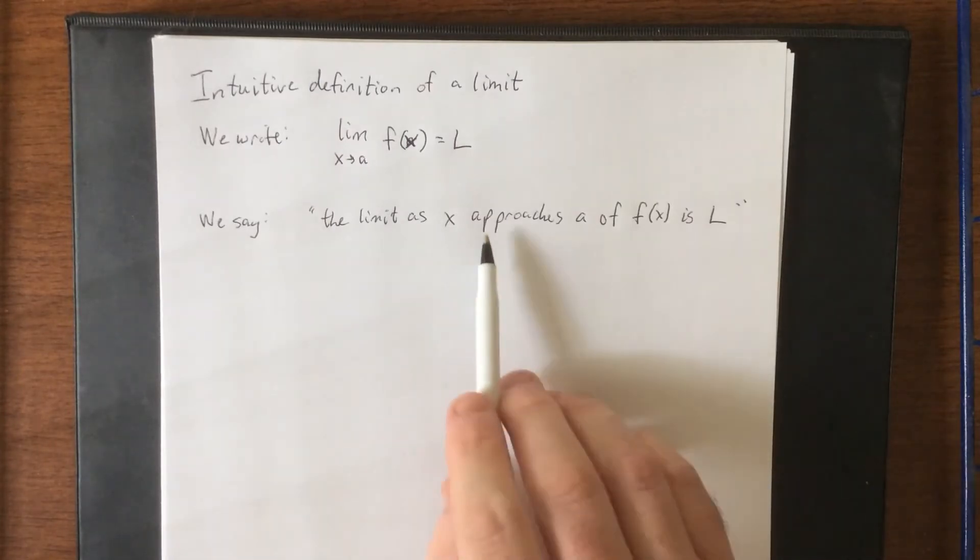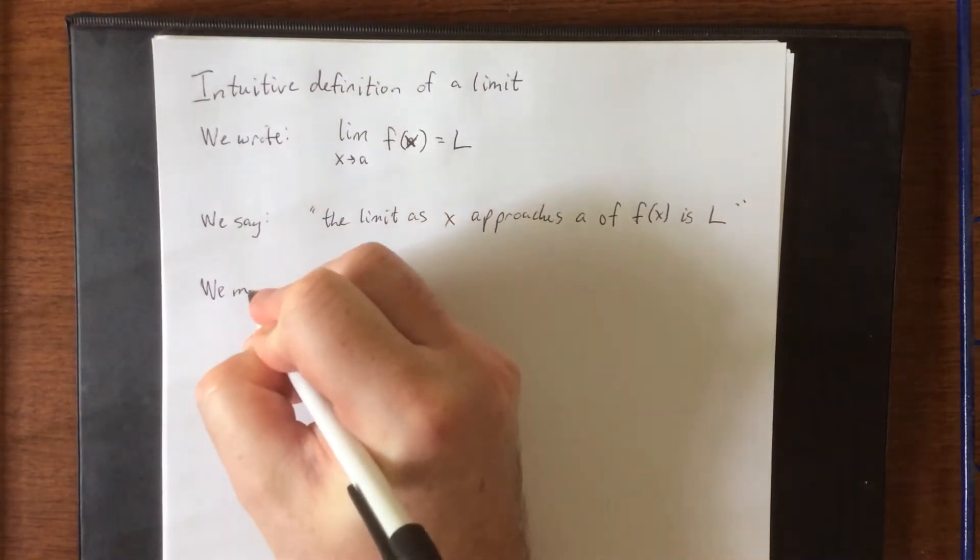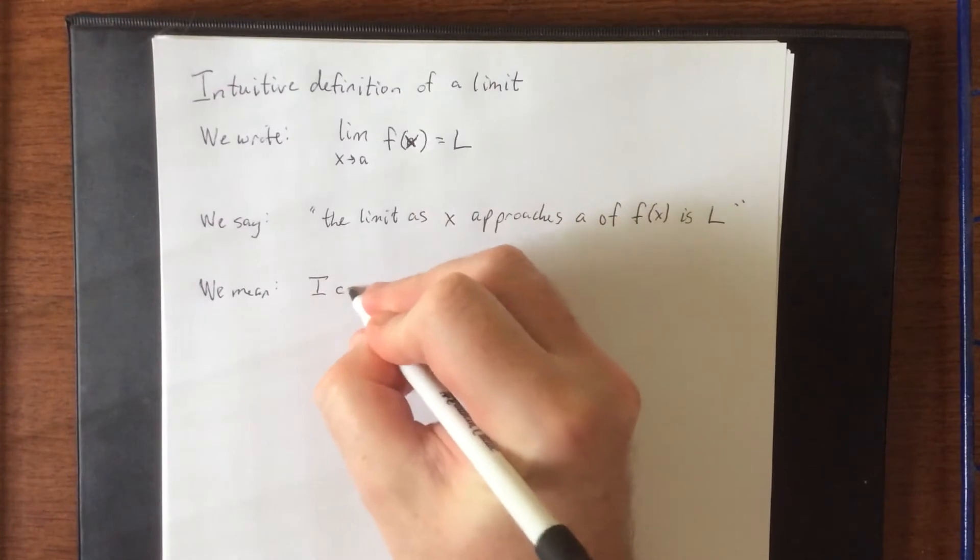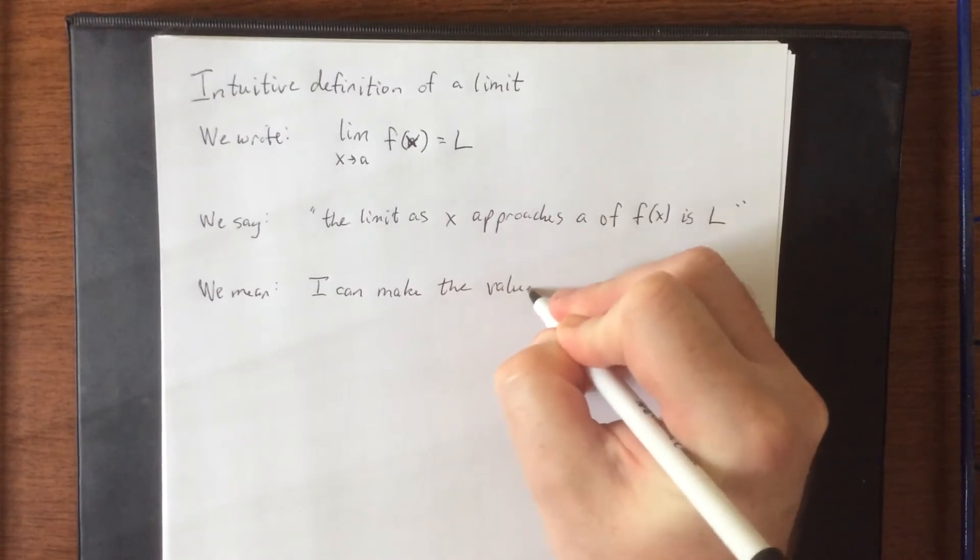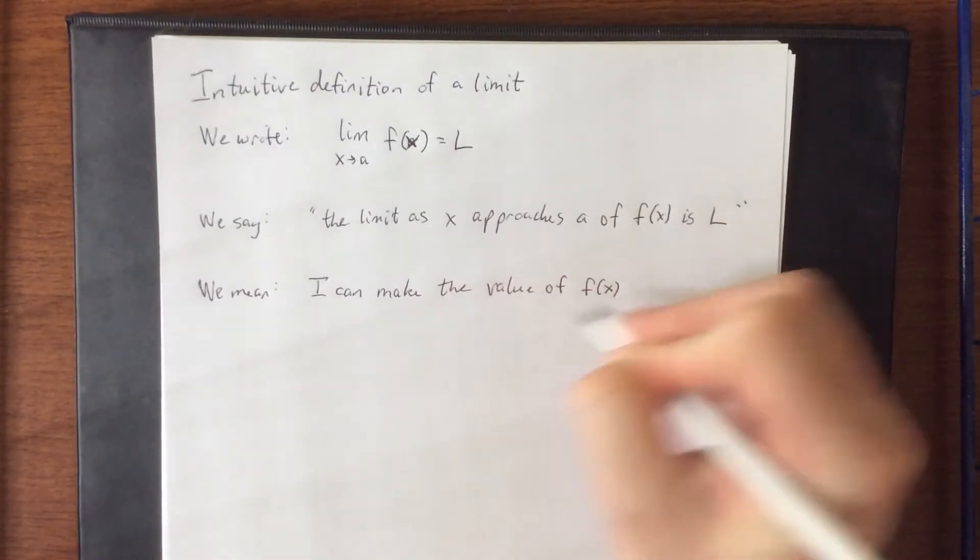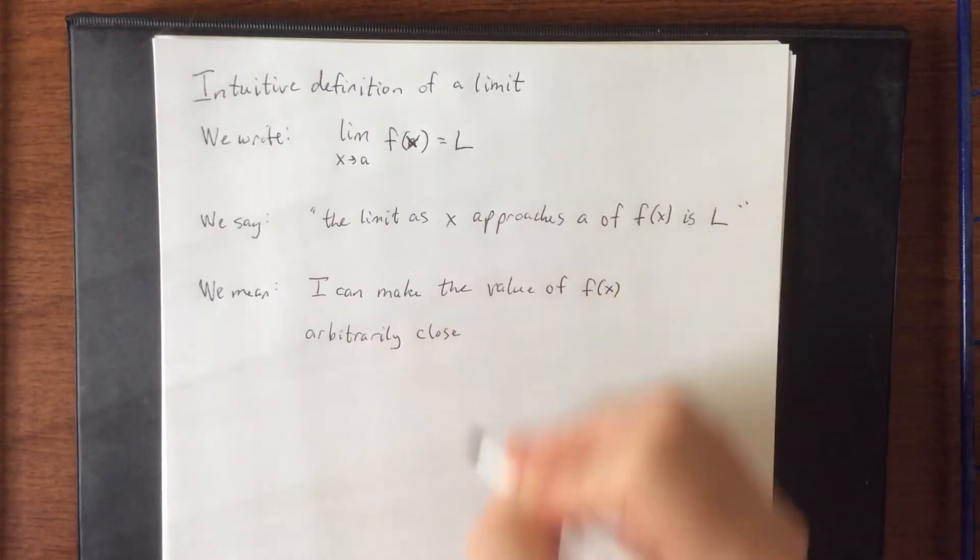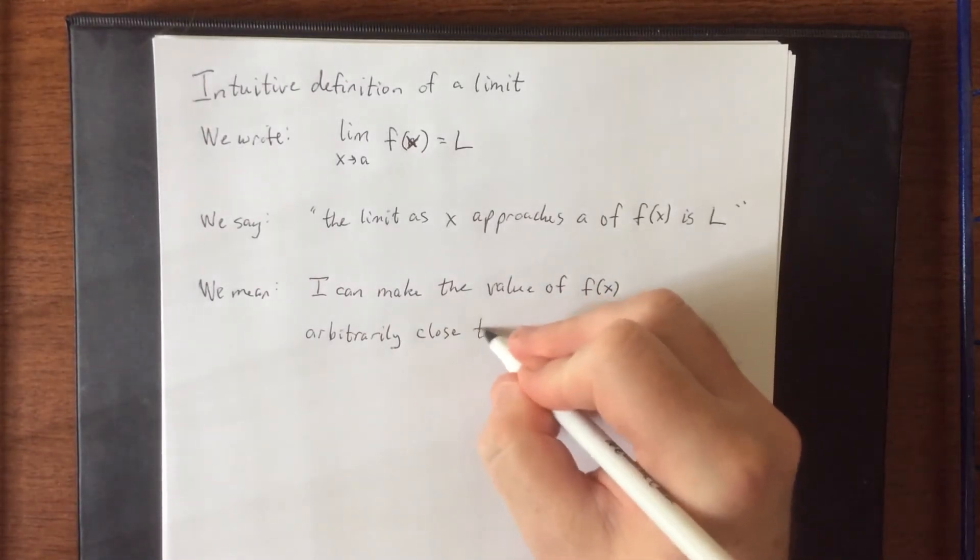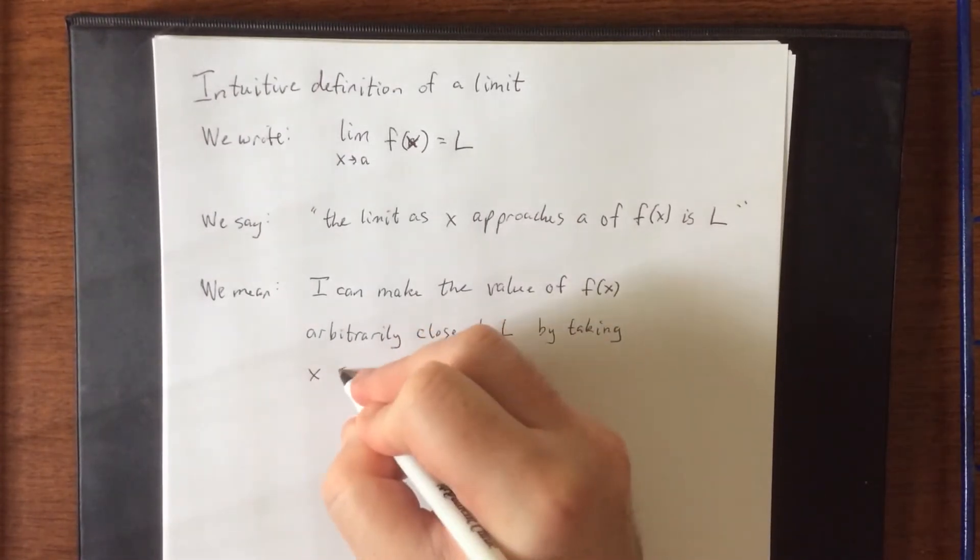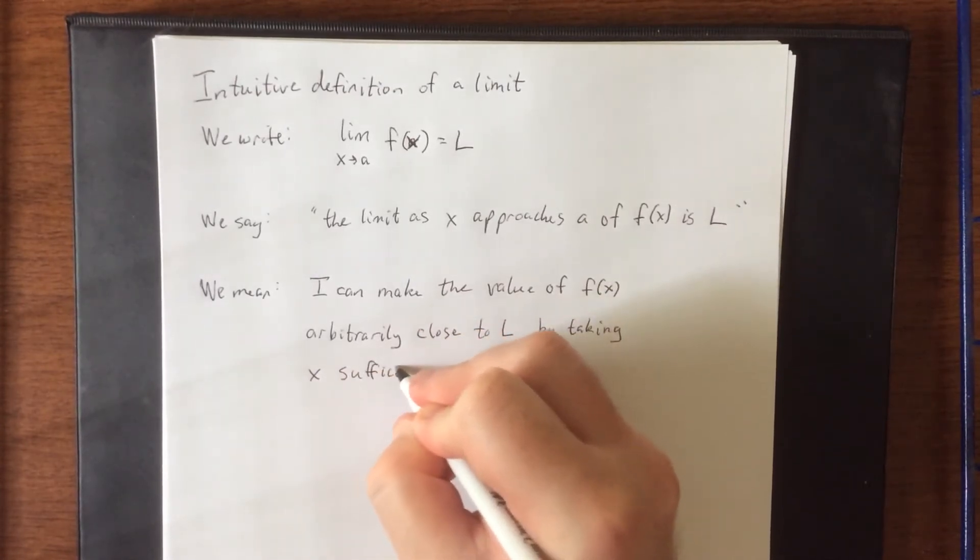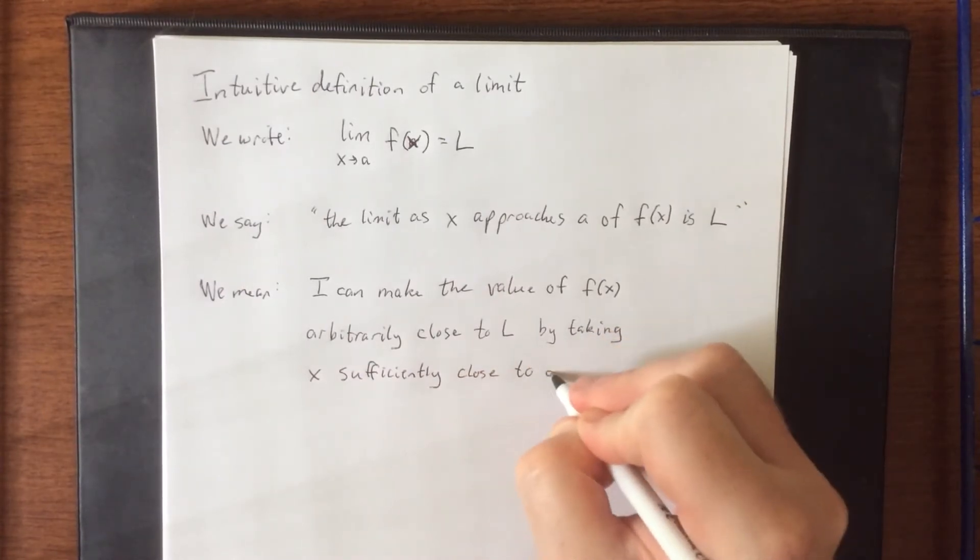A super key important word there is the concept of approaches, not actually equal to. We mean the following: I can make the value of F of X arbitrarily close, which is a fancy way of saying as close as I want to L, by taking X sufficiently close, that is a certain necessary distance, to A.